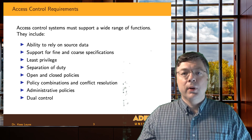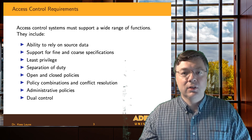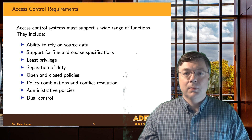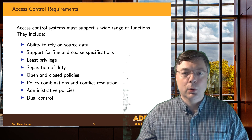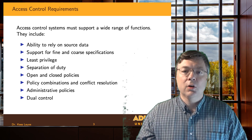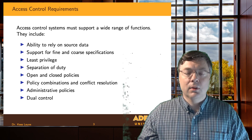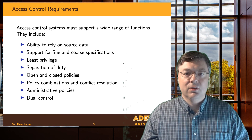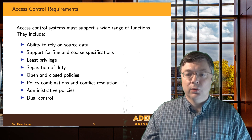We want to be able to support open and closed policies. An open policy says unless something is forbidden, it's allowed. A closed policy is the opposite: unless something is allowed, it is forbidden. From a security perspective, we typically prefer closed policies, but those are not always practical. For example, on campus wireless you're allowed to browse anywhere except a handful of sites known to host malware — that's an open policy. But access to the class registration system is limited to only a handful of computers on campus — that's a closed policy.